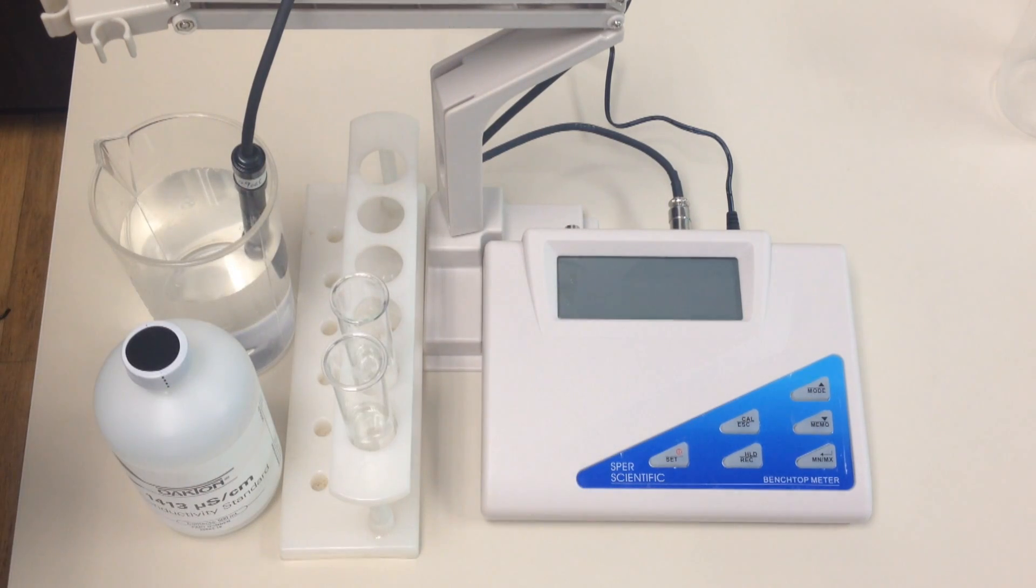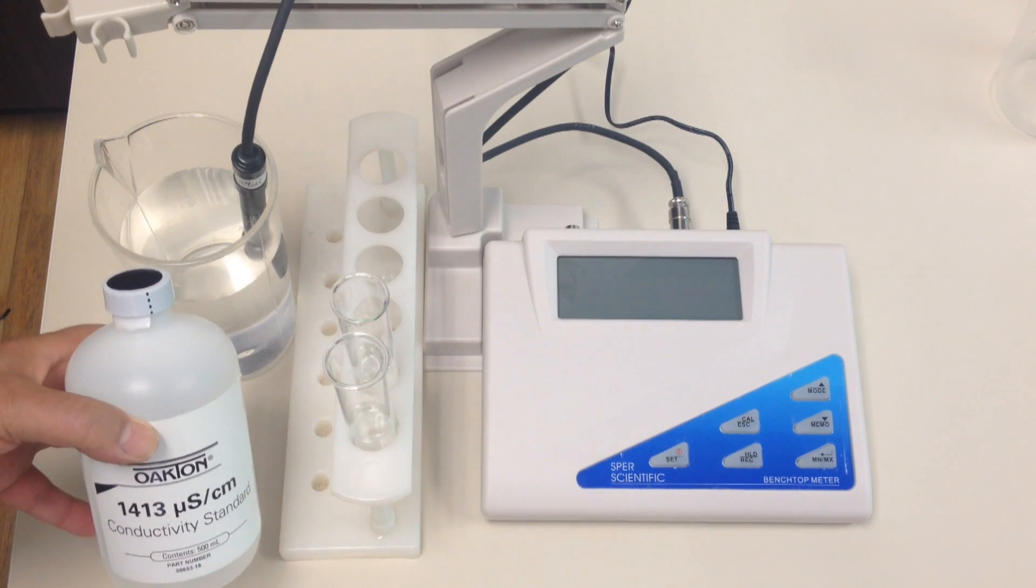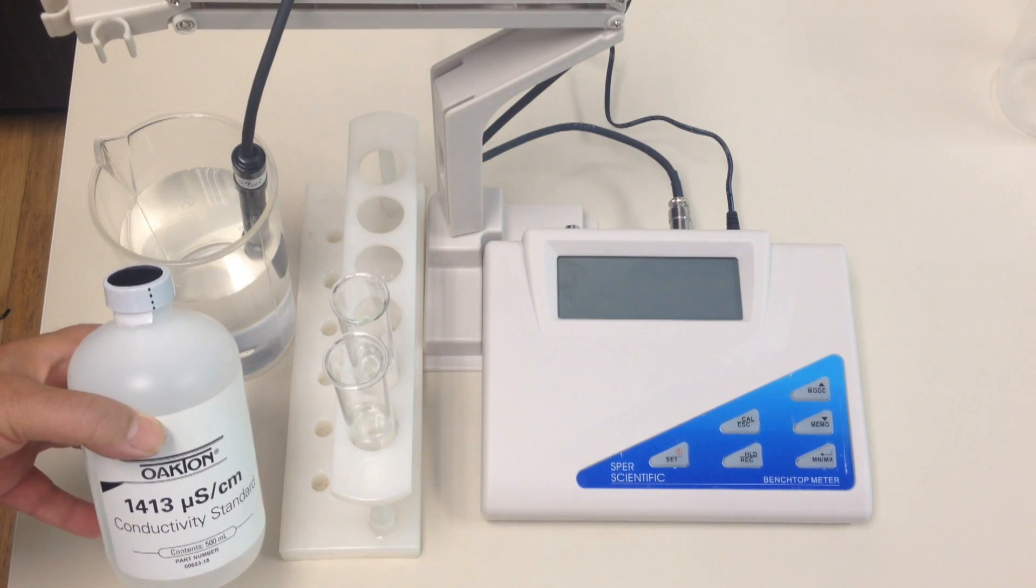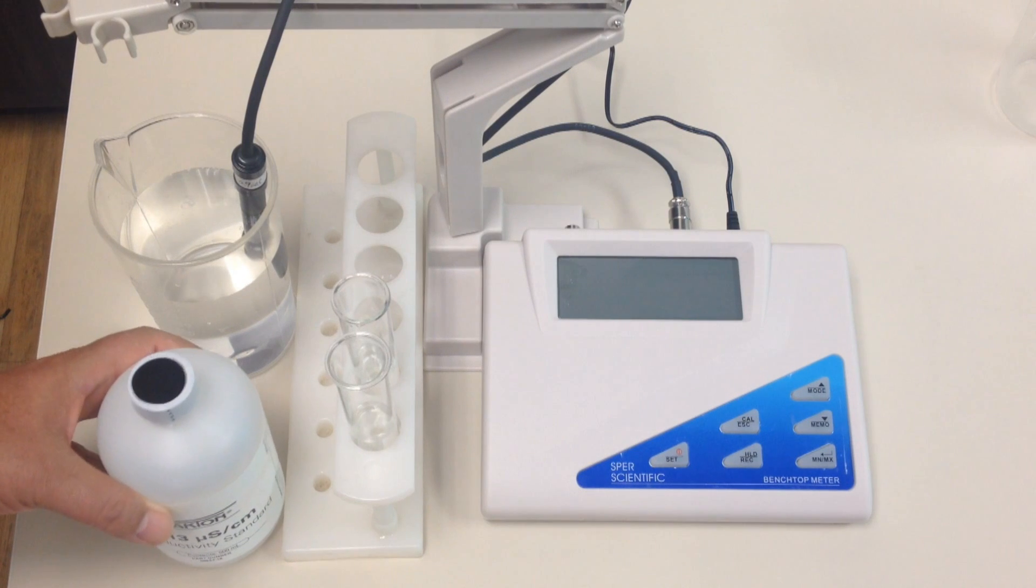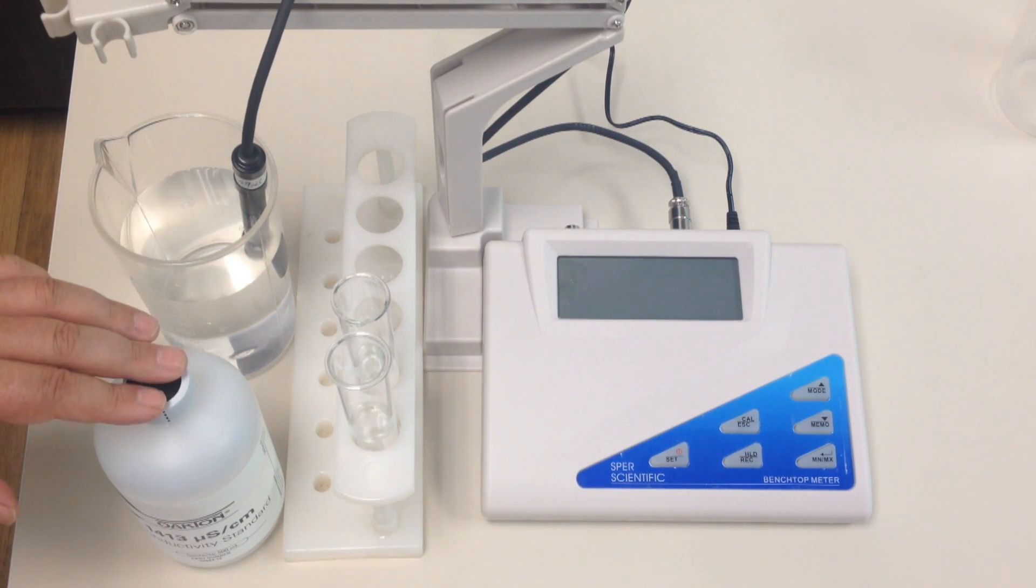Now this unit does five different ranges, and they're found on page 31 of your manual as well. So today we're going to be doing range 3, so the calibration solution that we're going to be using is 1413. So that's important information for you to know. We also are using the two beaker solution as is recommended in the manual.